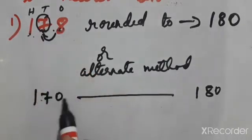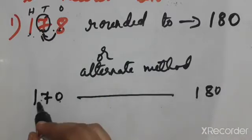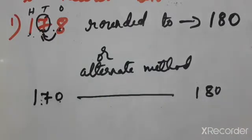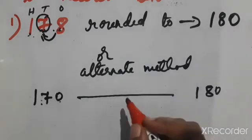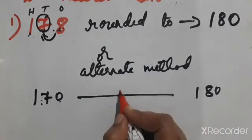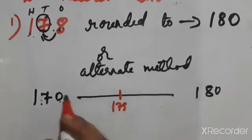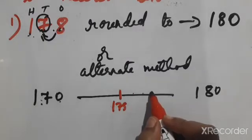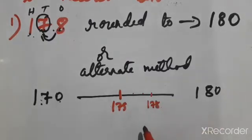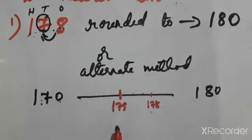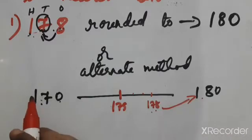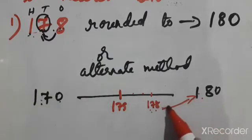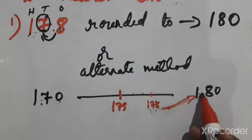The tens place is being rounded. We look at the number line from 170 to 180. The exact middle is 175. The numbers go: 171, 172, 173, 174, 175, 176, 177, 178. One seventy-eight comes here, past the middle. One seventy-eight is nearer to 180 than to 170. So 178 is rounded to 180.